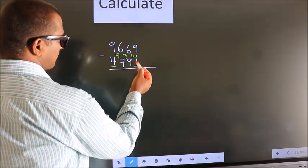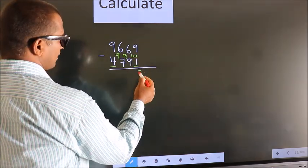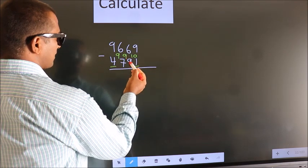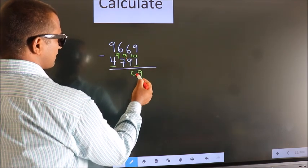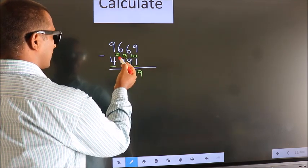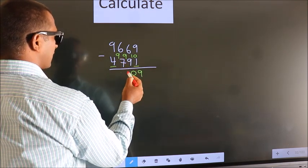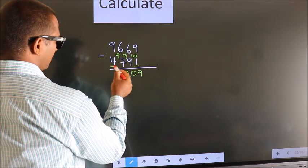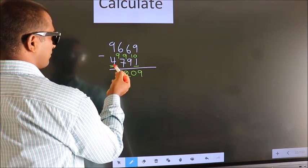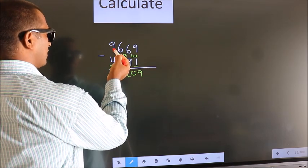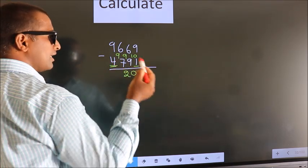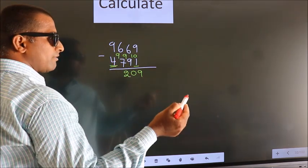10 minus 1 is 9. 9 minus 9 is 0. 9 minus 7 is 2. Now for the first digit we do 9 minus 4, we get 5.